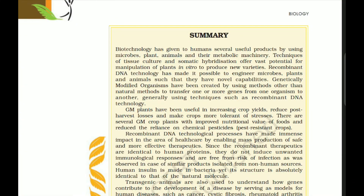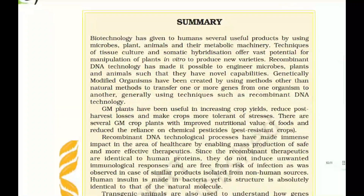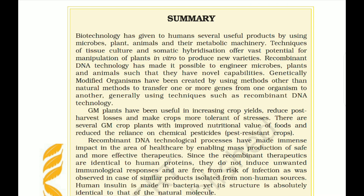Summary: Biotechnology has given humans several useful products by using microbes, plants, animals, and their metabolic machinery. Techniques of tissue culture and somatic hybridization offer vast potential for manipulation of plants in vitro to produce new varieties. Recombinant DNA technology has made it possible to engineer microbes, plants, and animals such that they may have novel capabilities. GM plants have been useful in increasing crop yields, reducing post-harvest losses, and making crops more tolerant of stresses, with improved nutritional values and reduced reliance on chemical pesticides.